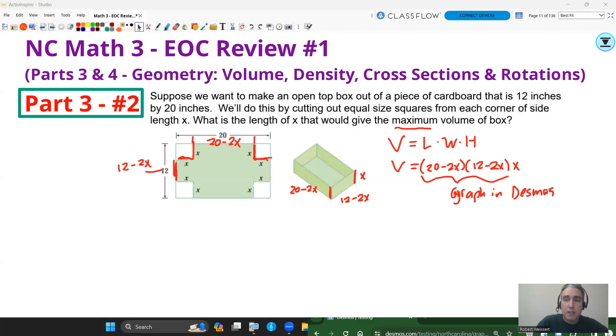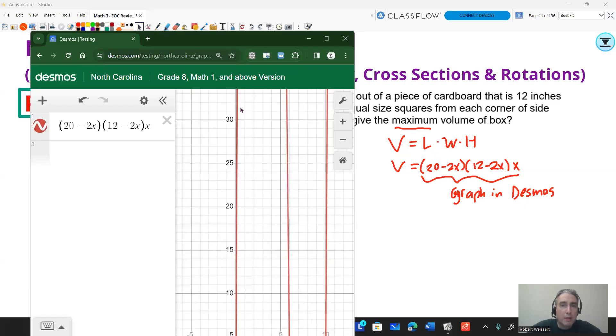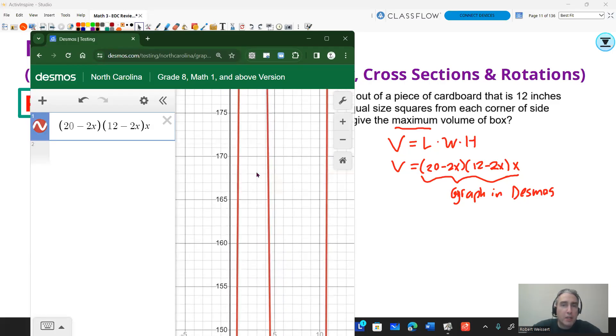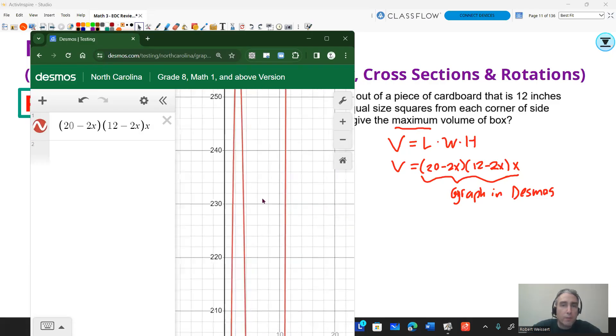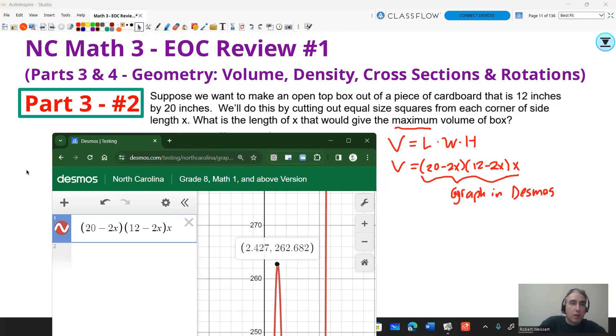Pause the video and see if you can throw that in Desmos. When you key this in, you're going to get a function that looks kind of weird at first. But what you want to realize is we're only dealing with the numbers between this zero and this zero. So I want to know where the maximum is. I'm going to have to go all the way up here. You can zoom out if you want, but I'm looking for that point. And this question wants to know specifically, what is the length of x that would give the maximum volume of the box? X in this case is 2.427. This is the volume that is the maximum, but this is the answer to the question: X is going to be 2.427 inches.